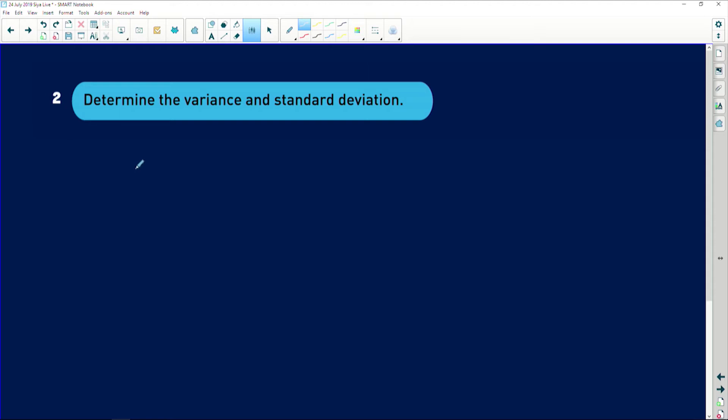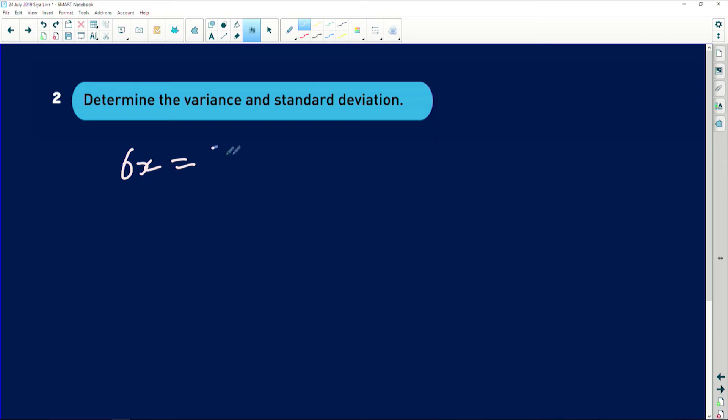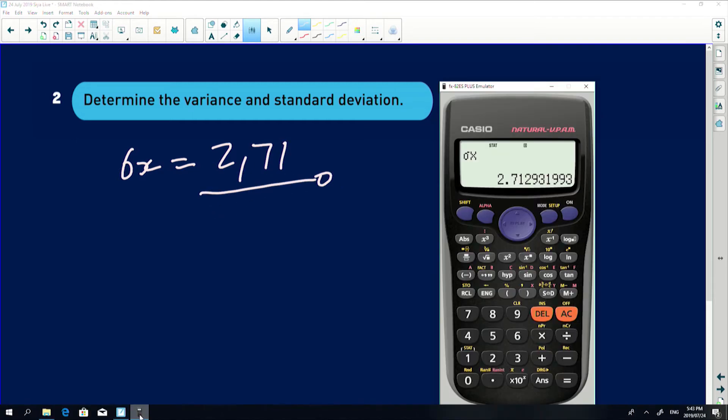Now, what we can find from the question, the calculator will be what the standard deviation is. So I'm just going to go to my calculator. Remember, we press our all clear. Shift, number one, and then four. Because I want my standard deviation, I take option three. It is equal to 2.71 rounded off to two decimal places. The number after the one is less than five, so it will just remain one.